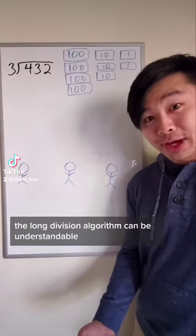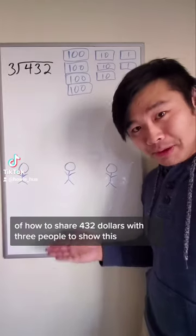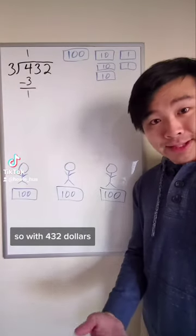The long division algorithm can be understandable, and I'm going to use the example of how to share four hundred and thirty-two dollars with three people to show this. So with four hundred thirty-two dollars, let's assume that